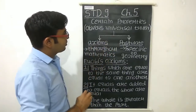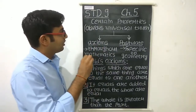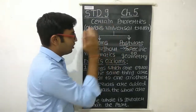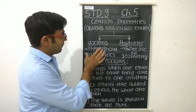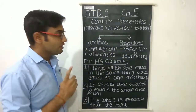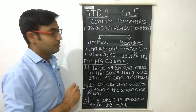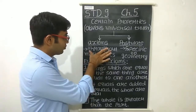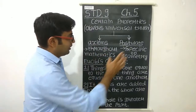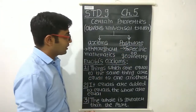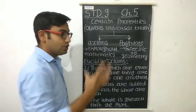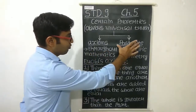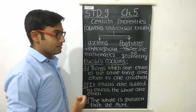That obvious universal truth, or certain properties that Euclid assumes, is divided into two parts. One is called axioms and the second is called a postulate. Axioms are properties which are used throughout mathematics, while postulates are statements or properties which are specific to geometry only.